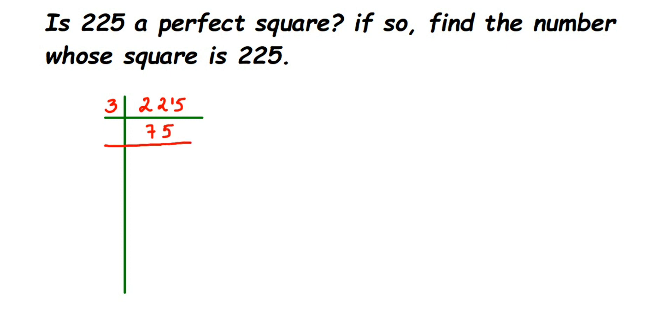So three twos are six, one is a remainder that makes 15, and 3×5 is 15, which gives us 25. The next prime number is five. So 5×5 is 25, and 5×1 is 5.